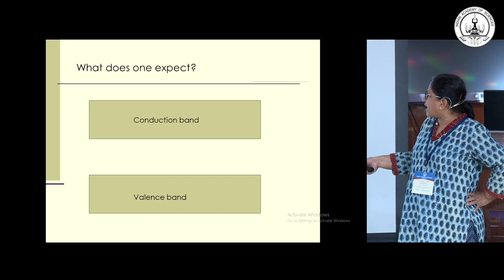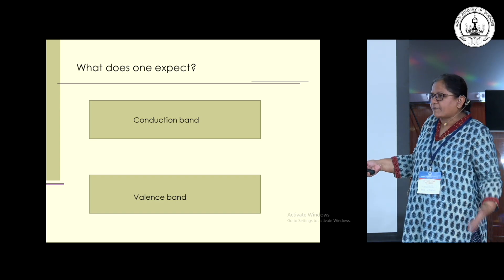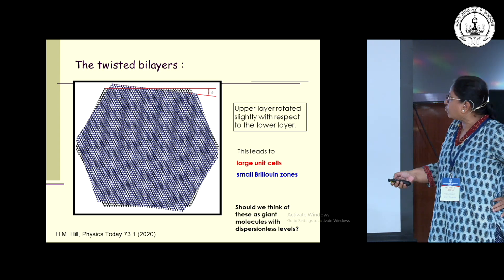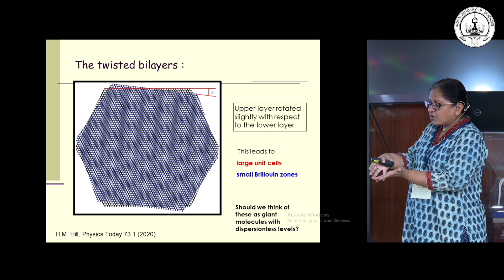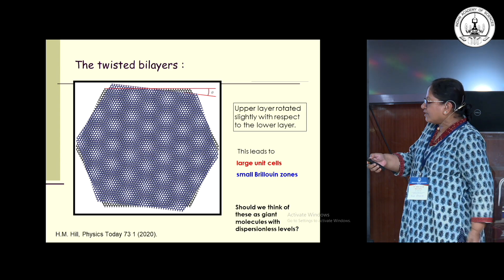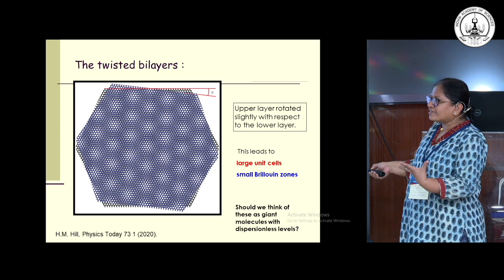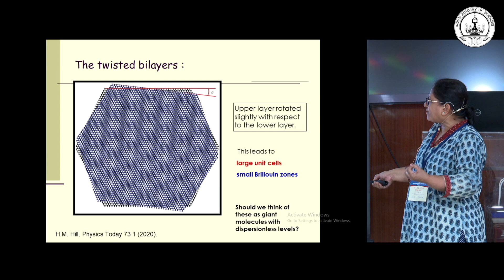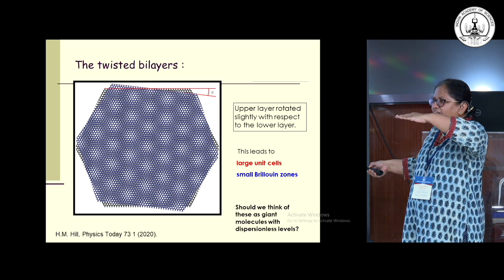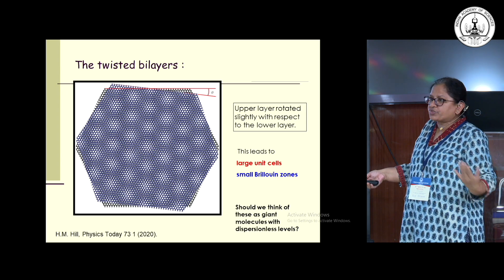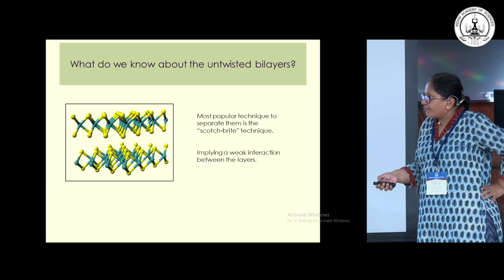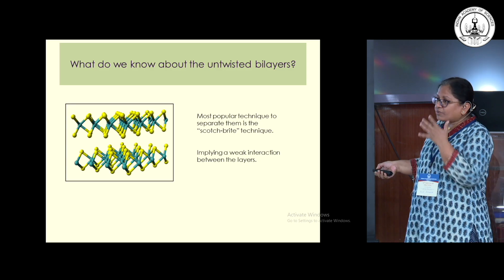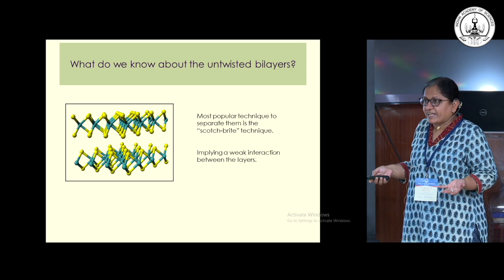Naively, moving my Fermi level into my valence band, I wouldn't expect anything except metallic transport. One viewpoint that has existed is that twisting creates very large unit cells, which means the Brillouin zone in Fourier space would be very small, giving very dispersionless levels responsible for the unusual behavior. But we know the coupling is very weak — you can remove layer by layer with scotch tape — and that should also reflect itself in the electronic structure.